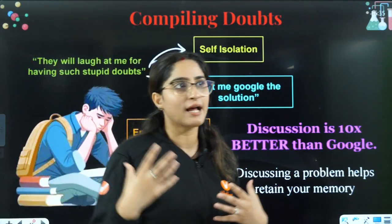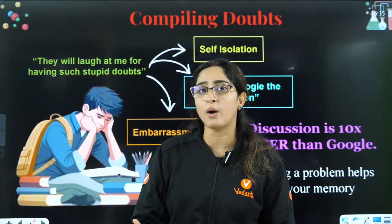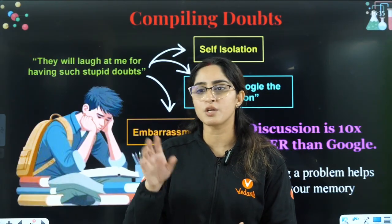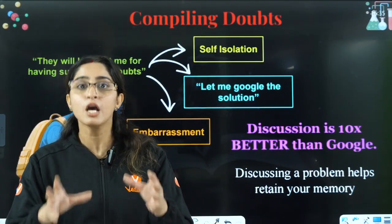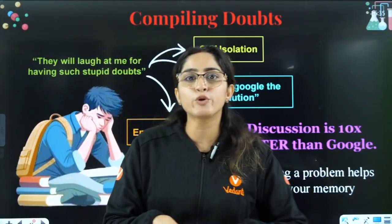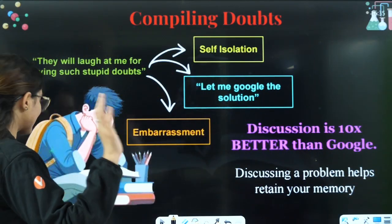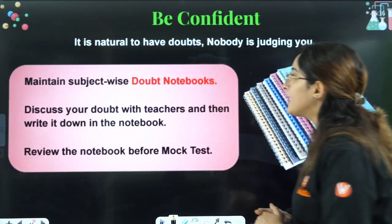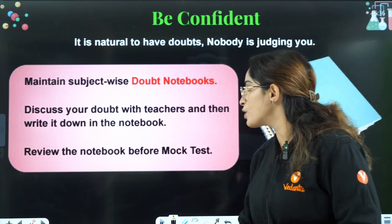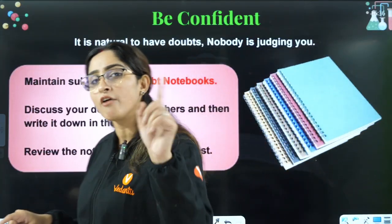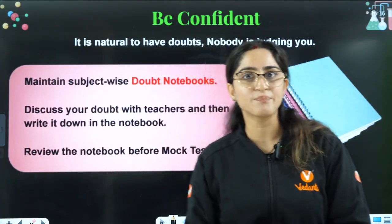The fifth mistake is not compiling doubts. Students keep making the same mistake in a question again and again and don't ask anyone. Instead of Googling, talk to your friends or teachers — ask your doubts and don't be embarrassed. Self-isolation and Googling solutions won't help you. Discussion is very important. Maintain a subject-wise doubt notebook, discuss doubts with teachers, write them down, review the notebook before mock tests, and fill mistakes into your mistakes notebook after each mock test.